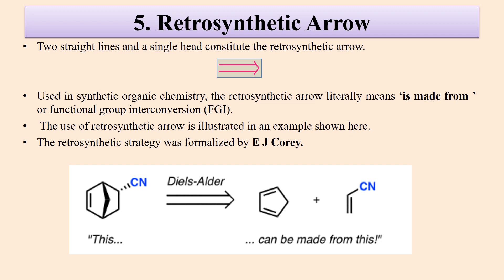Then there is the less commonly used retrosynthetic arrow. Two saturated lines and a single head constitute a retrosynthetic arrow. It is one of the widely used tools in synthetic organic chemistry. This arrow shows that a product is made from certain reactants. The retrosynthetic strategy was formalized by E. J. Corey.